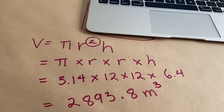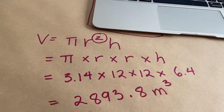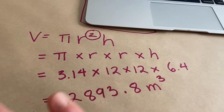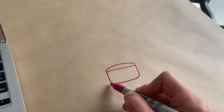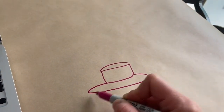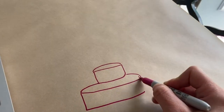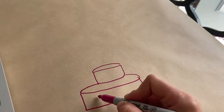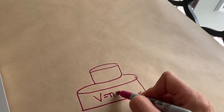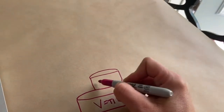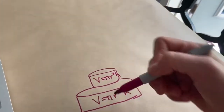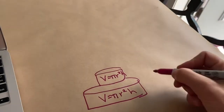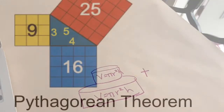So the question that you're going to do for your summative is almost exactly the same, except there are two cylinders. There's this cylinder and there is this cylinder. So I need to find the volume of the first one — Pi R squared H — and the volume of the second one — Pi R squared H. And since they're on top of each other, making it bigger, we need to add the two together.